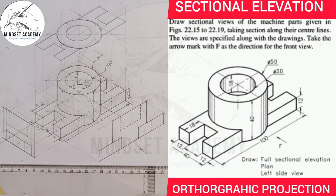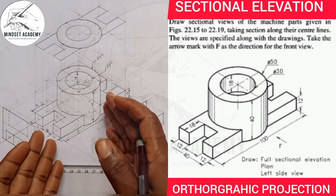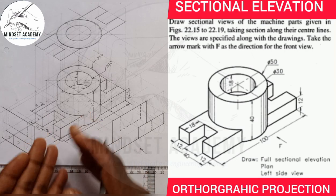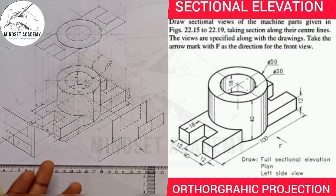Welcome to my channel Mindset Academy, where we want to section the given figure displayed on the right-hand side of the screen. We are told to draw the section view of the front elevation. If you look at this figure closely, I have reproduced it on my drawing sheet — this is what we have here without sectioning.